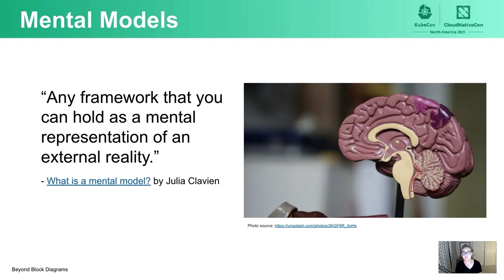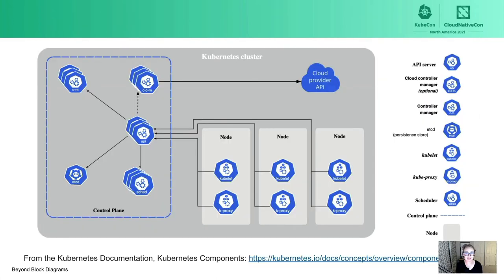We all use mental models to think about and interact with systems like Kubernetes. A good definition of mental models is any framework that you hold as a mental representation of an external reality. When I started at Fairwinds and had more senior engineers mentoring me and trying to help me understand Kubernetes, static block diagrams often came up. They are helpful representations of Kubernetes, but they're most helpful if you understand the technologies and practices that Kubernetes is replacing and automating. Since I didn't have that prior experience, these block diagrams were extremely difficult for me to understand and I didn't find them helpful.